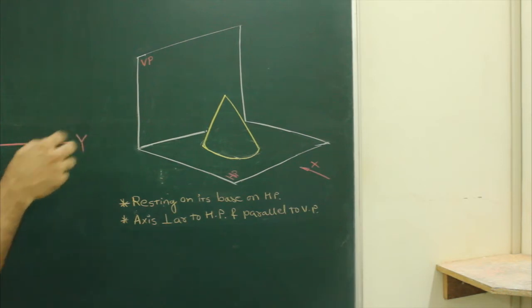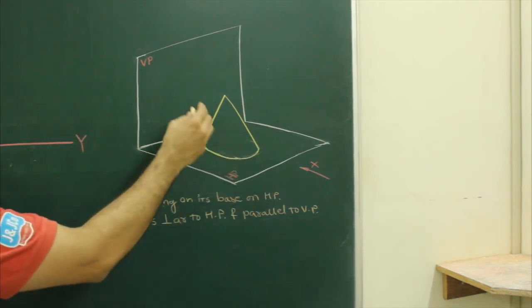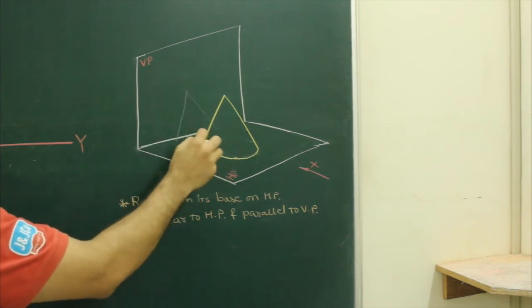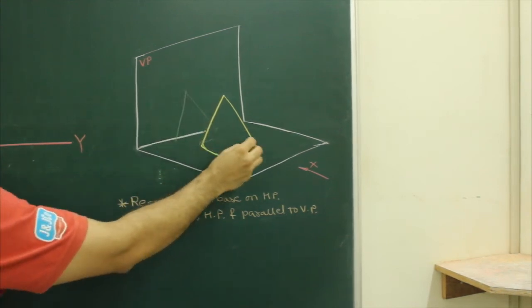You will be able to see a triangle in front view. When you see from here, you will see a triangle in front view, and in top view you will see a circle.